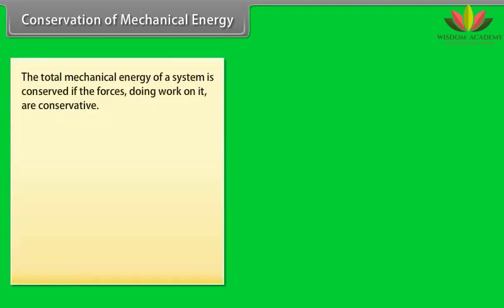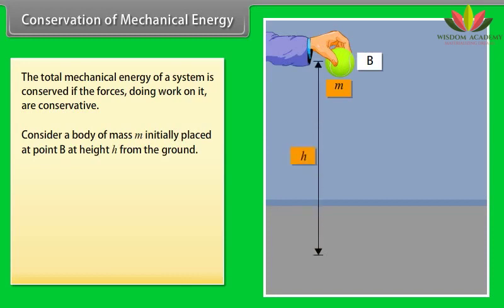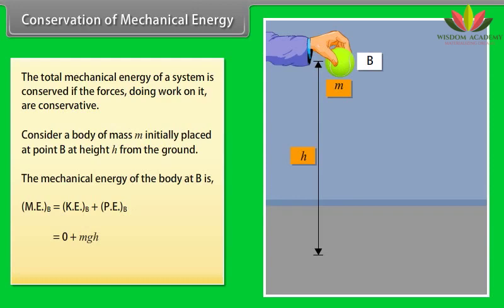Conservation of mechanical energy. The principle of conservation of total mechanical energy states that the total mechanical energy of a system is conserved if the forces doing work on it are conservative. Let us understand it with an example. Consider a body of mass m initially placed at point b at height h from the ground. The mechanical energy of the body at b is mechanical energy of the body at b is equal to kinetic energy of the body at b plus potential energy of a body at b is equal to 0 plus mgh is equal to mgh.